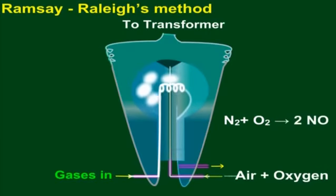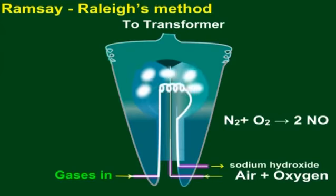The oxides are dissolved out in a solution of sodium hydroxide continuously circulated through the flask.